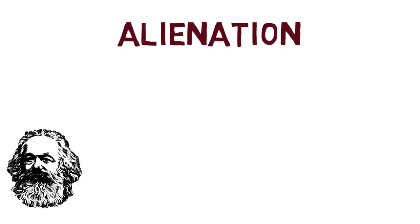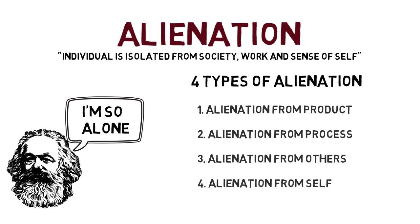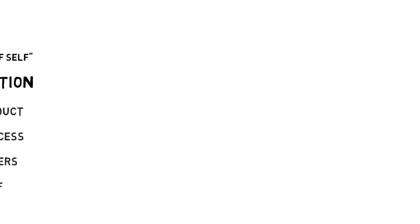Under capitalism, the proletariat experienced what Marx called alienation. Alienation is the condition in which the individual is isolated from society, work, and the sense of self. Let's explore the four different types of alienation Marx discussed.